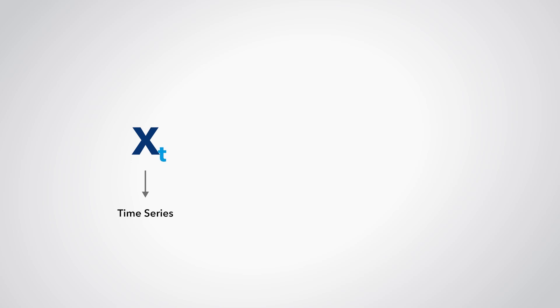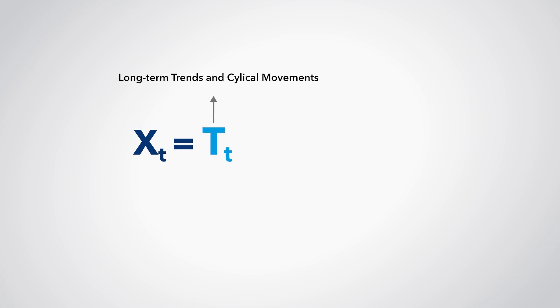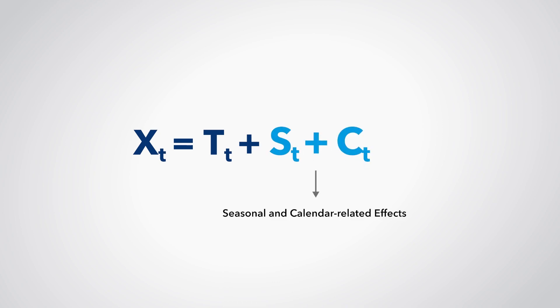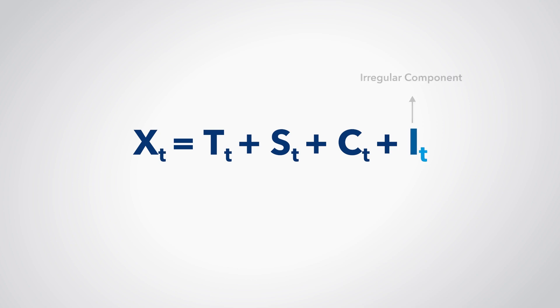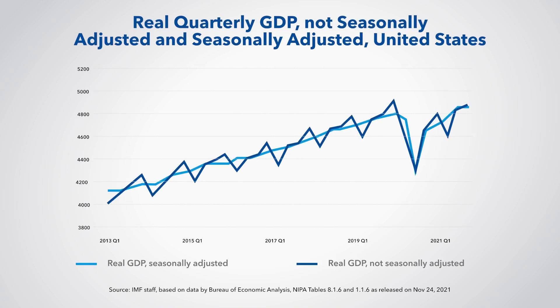Let's call a time series X_T, where the subscript T indicates that the series has data points for each period T. The series can be decomposed into three components: one for long-term trends and cyclical movements, T_t; another for seasonal and calendar-related effects, S_t plus C_t; and finally an irregular component that can be considered random, I_t. The seasonally adjusted data retain the trend cycle and irregular components but remove the seasonal component. The seasonally adjusted QNA series are used to identify cyclical turning points that can indicate the beginning and end of recessions. Analysts may also be interested in the trend cycle component, which removes both the seasonal and irregular components.